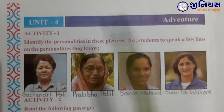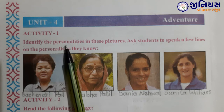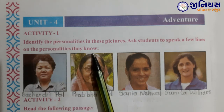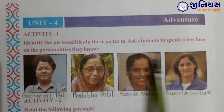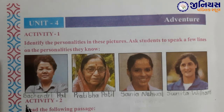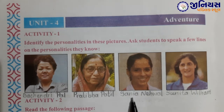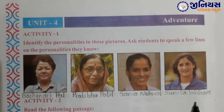Name of the unit is adventure. Unit number 4, adventure. Activity 1: Identify the personalities in these pictures. Ask students to speak a few lines on the personalities they know. Here some personalities' pictures are given — we need to identify them and speak a few sentences about them. First one is Bachhendri Pal — she is a mountaineer, parvita rohi. Next one: Pratibha Patil, politician. Sania Mirza — Sania Nehwal, badminton player. And Sunita Williams — American astronaut.